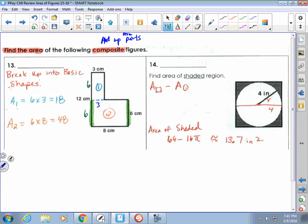And so I see I have a 6 by 3, which is 18. And then I have a 6 by 8, which is 48. So to get the total area, we're just going to add up the parts. So 18 plus the 48 gives us 66 centimeters squared.